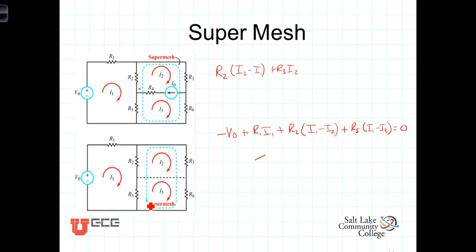Now, let's write the KVL equation going around our combined super mesh. Starting down here in the lower left-hand corner and going in a clockwise direction, we'll have voltage drop across R5 will be R5 times, let's be careful here, we're going up across R5. The current going up is I3 minus I1. So R5 times I3 minus I1 plus the voltage drop across R2 going in this direction will be R2 times I2 minus I1 plus the voltage drop across R3 is just going to be R3 times I2.